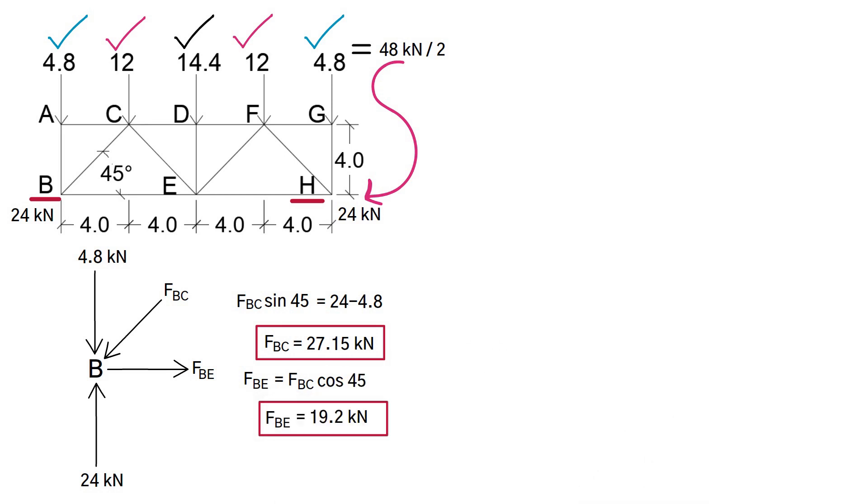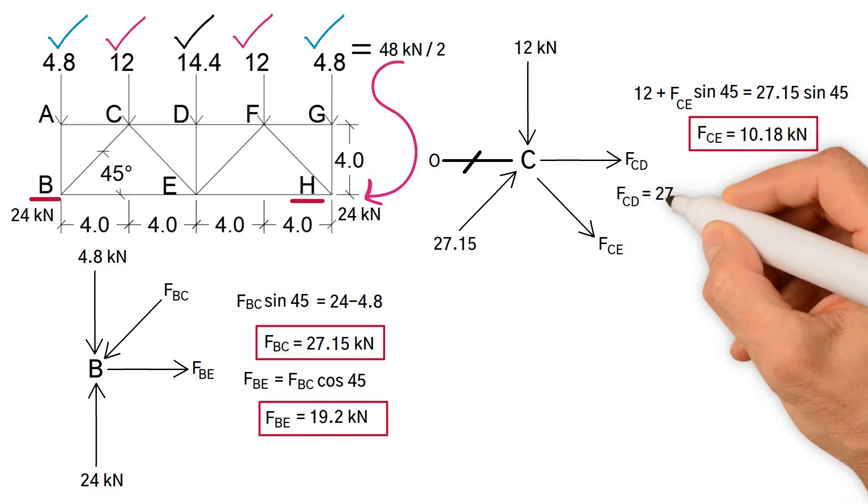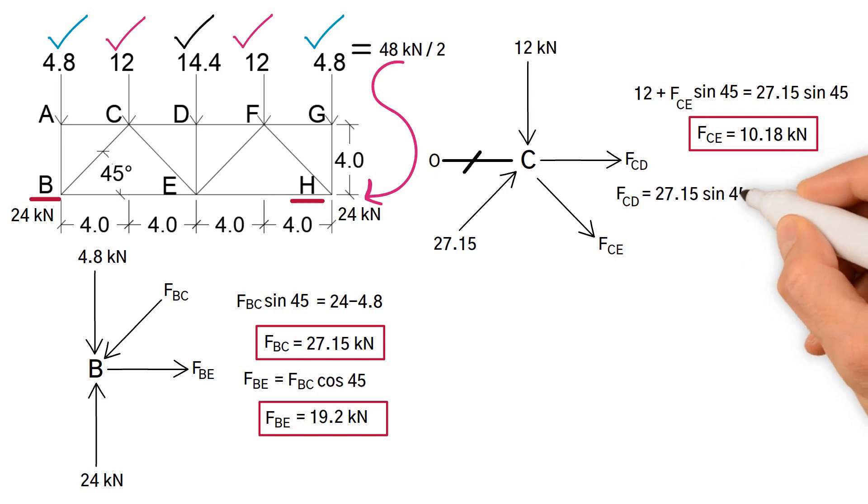Next, joint C. For equilibrium in the vertical direction, 12 kilonewtons plus the force of Ce sine 45 equals 27.15 sine 45. Hence Fce equals 10.18 kilonewtons. In the horizontal direction, force Cd should be equal to Fbc sine 45 plus Fce sine 45. In result, Fcd equals 26.4 kilonewtons.